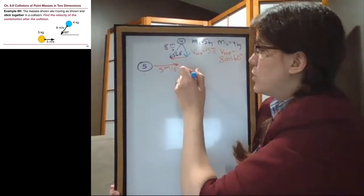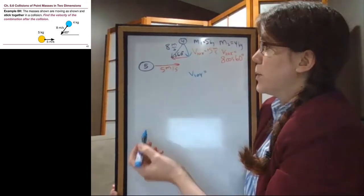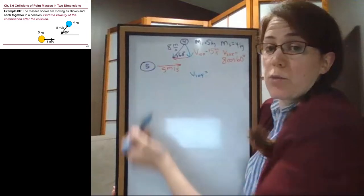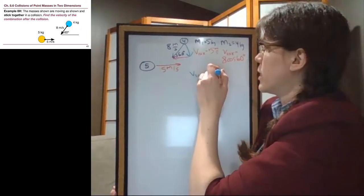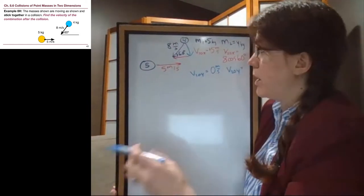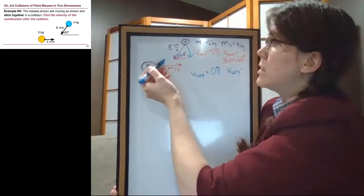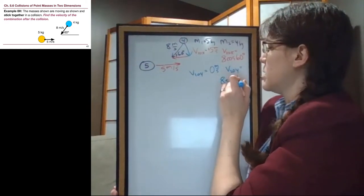We have the initial velocity in the y direction for the 5-kilogram block. There's no up and down part of that sideways arrow, and so that's zero. And the initial velocity for the 4-kilogram puck is this up and down piece. It's opposite of the angle, and so it is 8 sine 60 degrees.